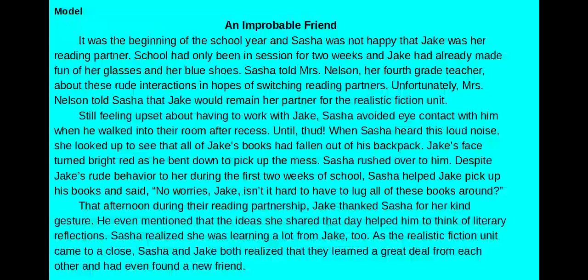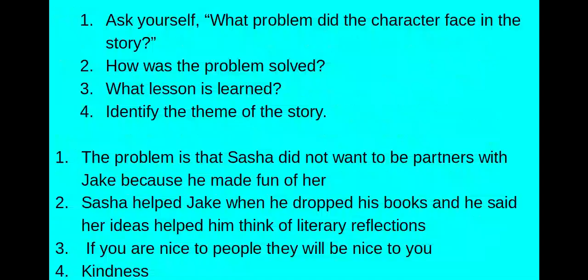Now I have to find the theme of this story by asking myself the following questions. What problem did the character face in the story? The problem is that Sasha did not want to be partners with Jake because he made fun of her. How was the problem solved? Sasha helped Jake when he dropped his books and he said her ideas helped him think of literary reflections. Number three, what lesson is learned? If you are nice to people, they will be nice to you.